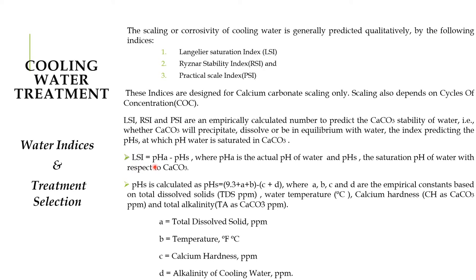Langelier Saturation Index is equal to pH actual minus pH saturated, where pH is the actual pH of the water and pHs is the saturation pH of water with respect to calcium carbonate. pHs is calculated as: pHs = 9.3 + A + B − C + D, where A, B, C, and D are empirical constants.